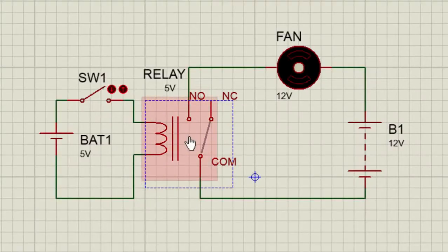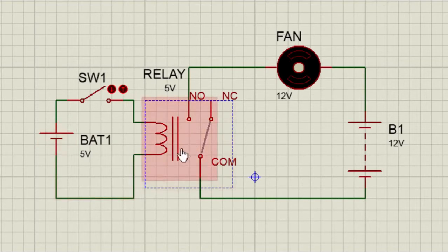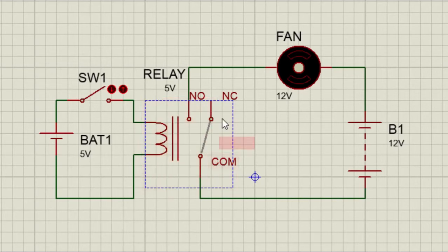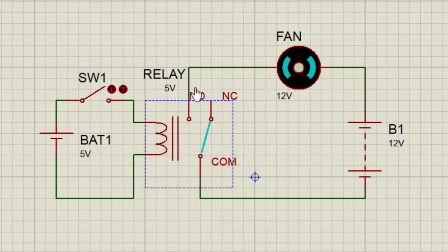This is the low-power section. When a low voltage is applied to the coil of the relay, this coil becomes a magnet which in turn energizes the soft iron core, which in turn closes or opens the contact of the relay.